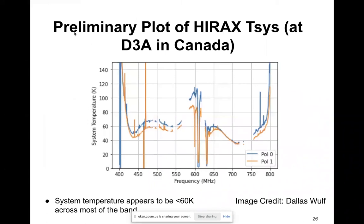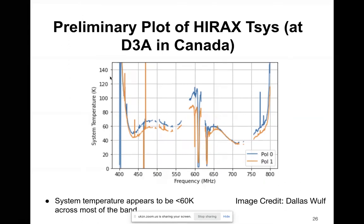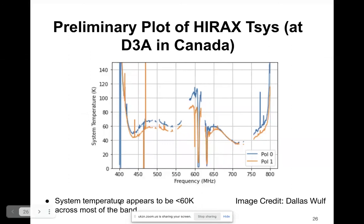Our collaborators from Canada also have a testbed for the IRAQS project at DRAO, using the Deep Three array. The measurements they recently obtained show that the system temperature is less than 60 Kelvins across our band, which gives us hope that we can actually achieve the 50 Kelvin system temperature target.